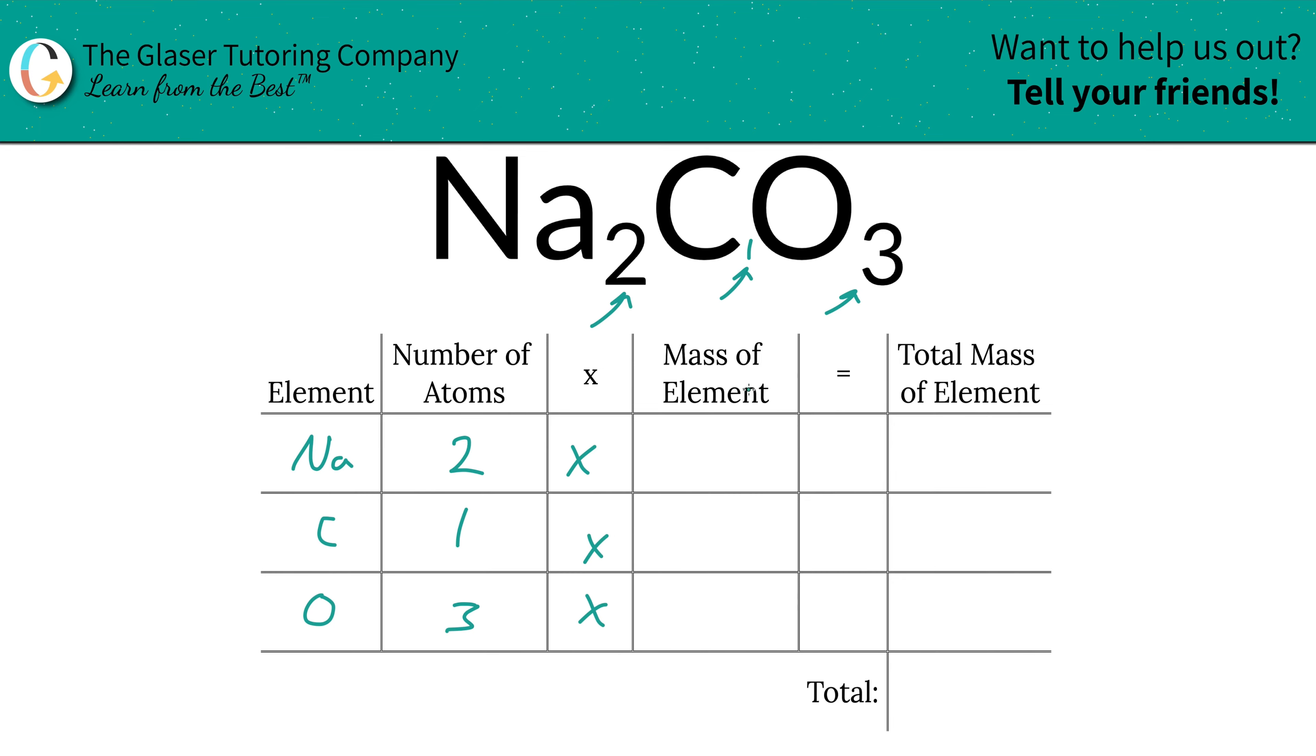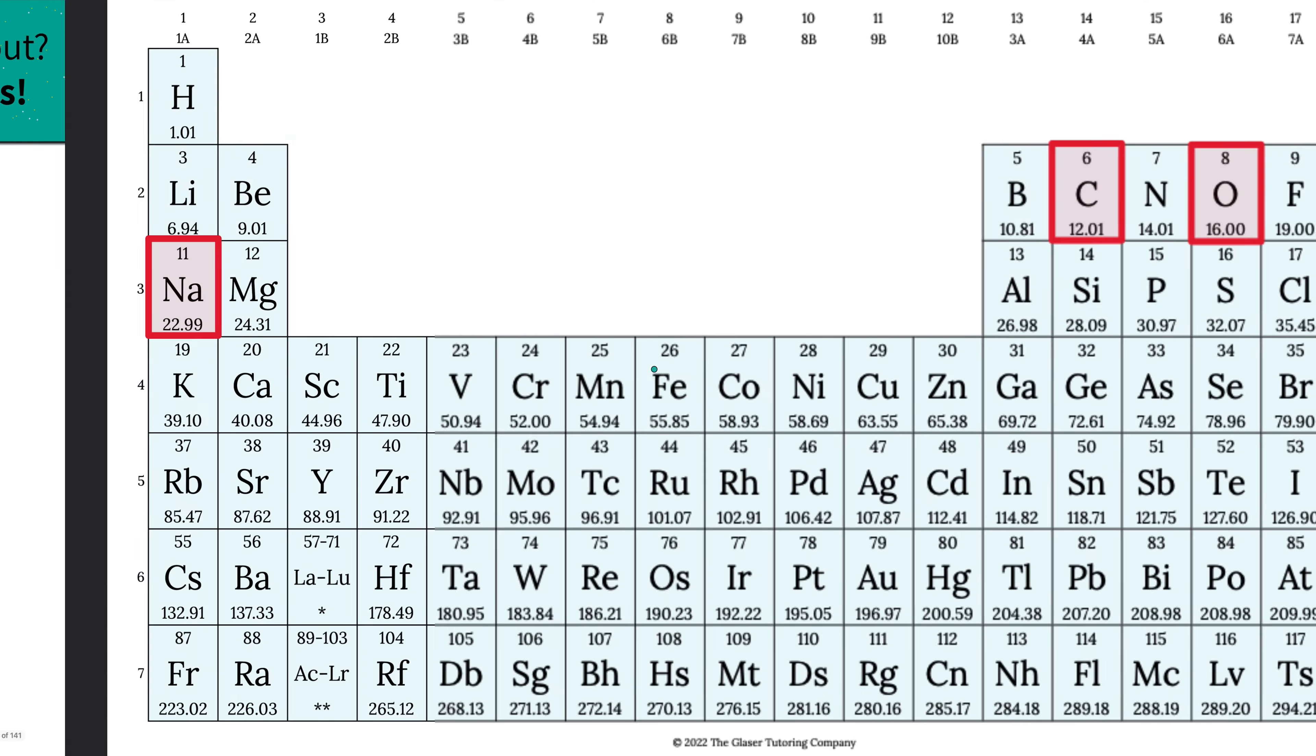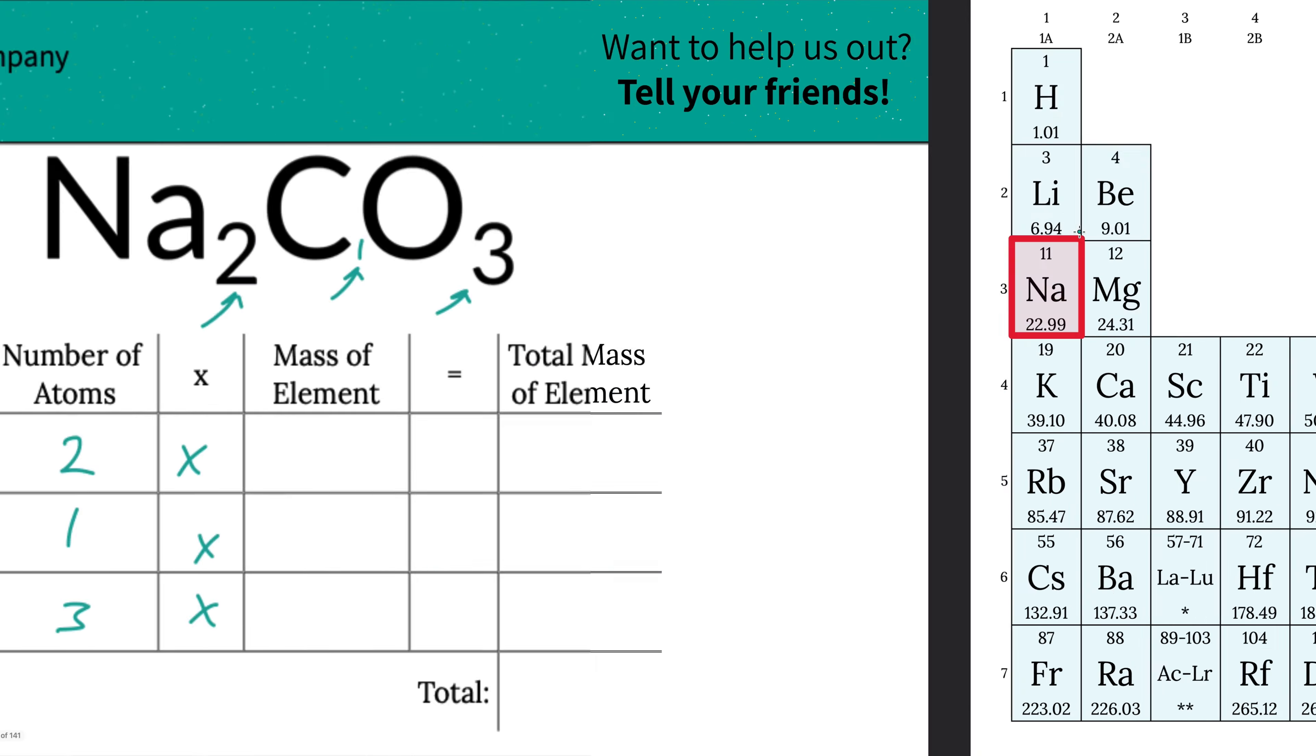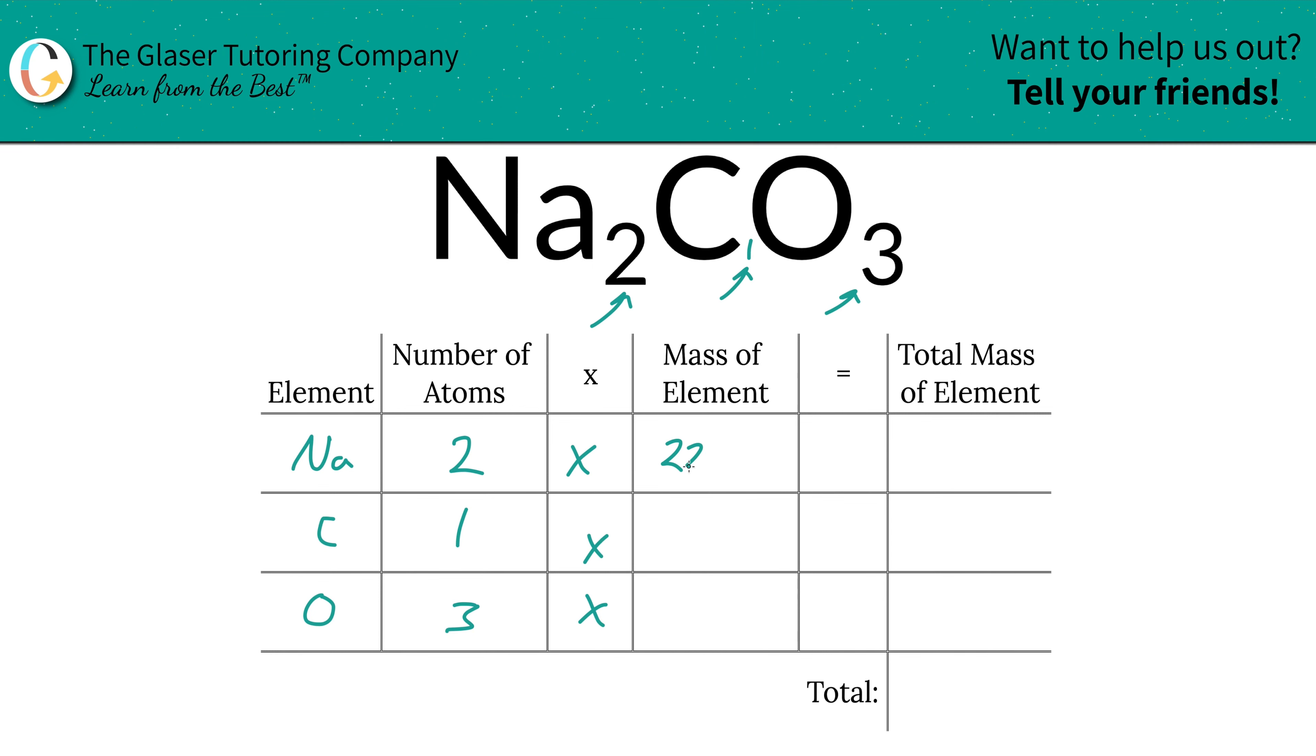Then we're simply going to multiply those number of atoms by the mass of each particular element, and those masses are found on the periodic table. Sodium's mass is 22.99, carbon is 12.01, and oxygen is going to be 16. So that's what we're going to write in. 22.99 for sodium, carbon is 12.01, and oxygen was 16.